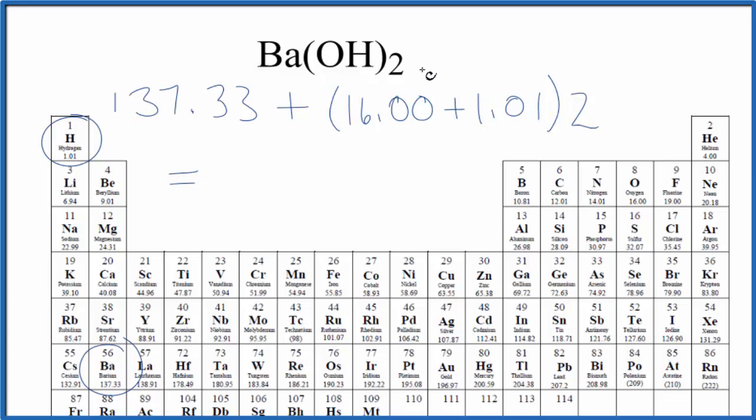Now we do the math. We multiply everything in here by 2, add it to the 137.33. We end up with a molar mass for Ba(OH)2 of 171.35 and the units are grams per mole.